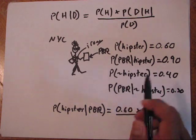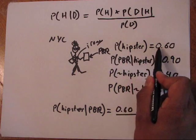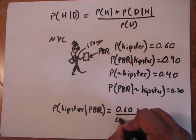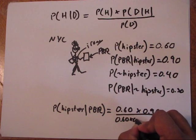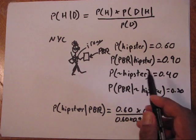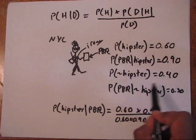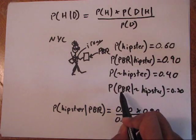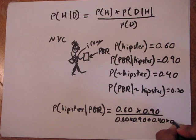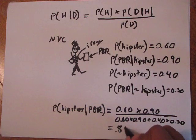We multiply those values and add them together for both non-hipsters and hipsters. There's 60% of people are hipsters, and of those 60%, 90% drink PBR, so that's 0.60 times 0.90. But then we need to add in the people that aren't hipsters that are also drinking PBR. The probability that someone is not a hipster is 40%, and of that 40%, 30% are drinking PBR—so 0.40 times 0.30. This whole thing gives us a grand total of 0.81.